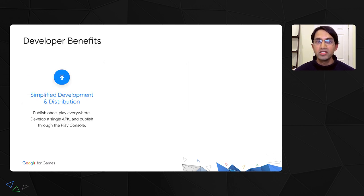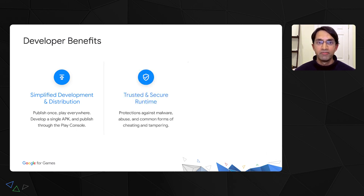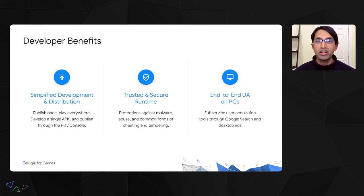For developers, the benefits of bringing your games to Windows PCs with Google Play Games are clear. We focused on simplifying the submission process so developers can publish once and play everywhere, using the Play Developer Console you already work with. We built a trusted and secure runtime, and with the new Play Integrity API, you'll have protections against common forms of cheating and tampering. We're also unlocking new end-to-end user acquisition capabilities for PCs, so you can expand your marketing reach beyond mobile and hit your ROI targets across all platforms.